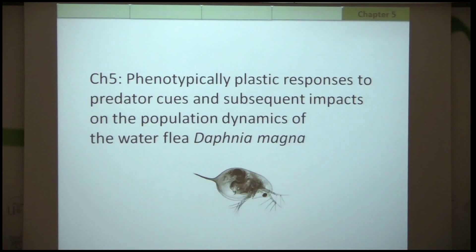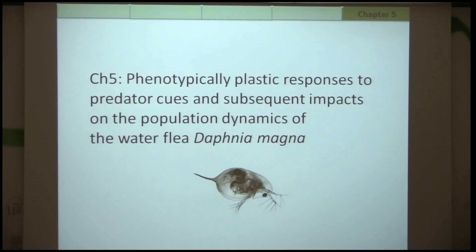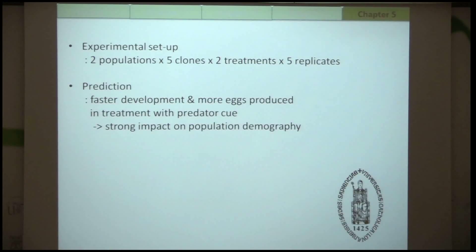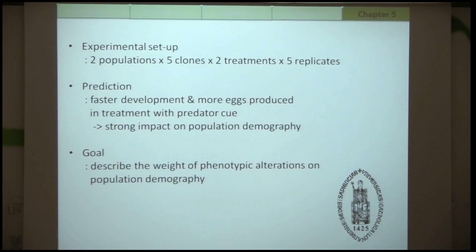My fifth chapter, since raising amphibians takes a lot of time in the laboratory, will use Daphnia to study the population dynamics resulting from phenotypic plasticity responses. I will have two populations with five clones each — one with strong phenotypic plasticity — and two treatments, with and without predator cues, with five replicates each. I predict that the treatment receiving predator cues will develop faster and produce more eggs, completely changing the population demography, and I will build a model to describe the weight of phenotypic alterations on population demography.